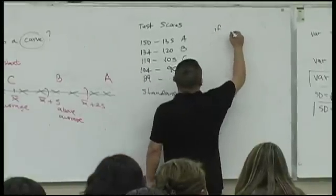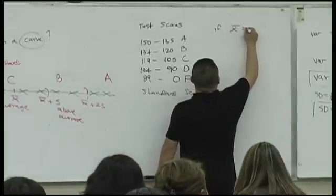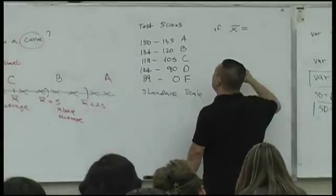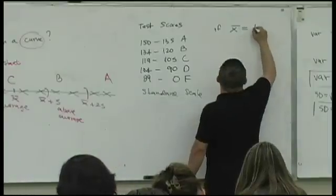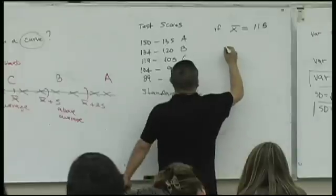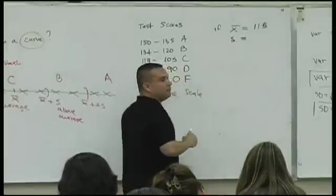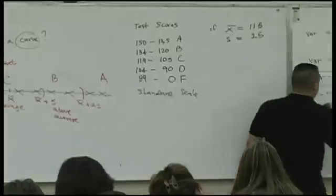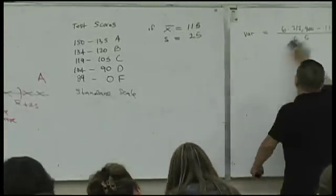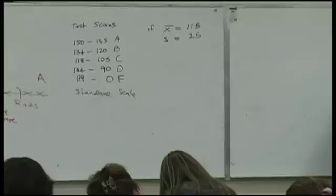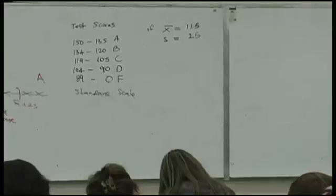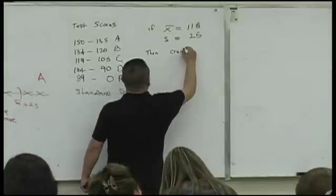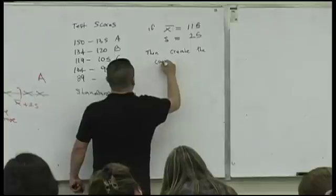Here's what's going to happen: say the first test has a mean of about 115 with a standard deviation of 25. We're going to create the curve scale from those values.